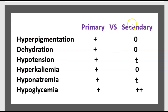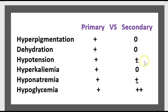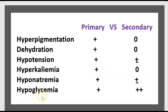Comparing primary versus secondary adrenal insufficiency: hyperpigmentation is present in primary, absent in secondary. Dehydration is present in primary, absent in secondary. Hyperkalemia is present in primary, absent in secondary. Hypoglycemia is more pronounced in secondary than in primary.